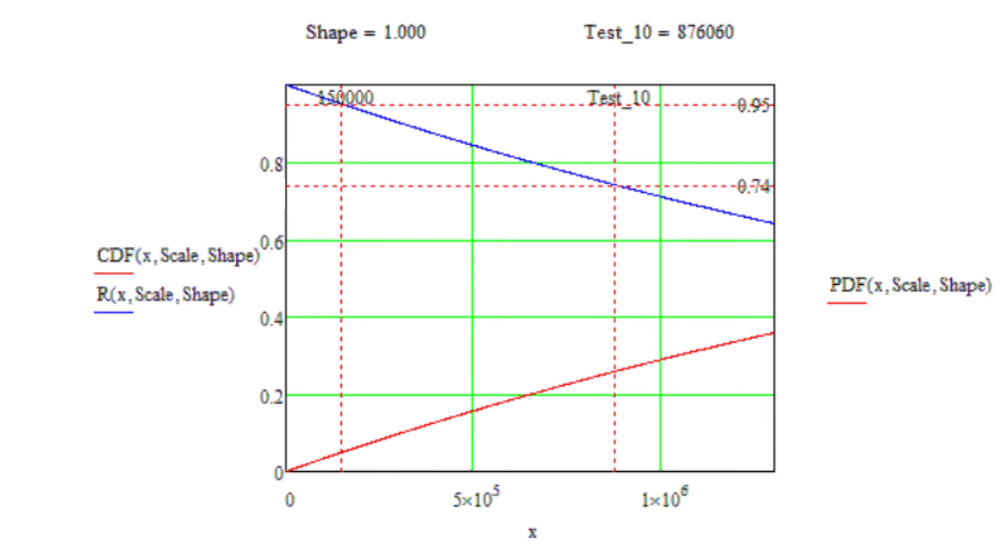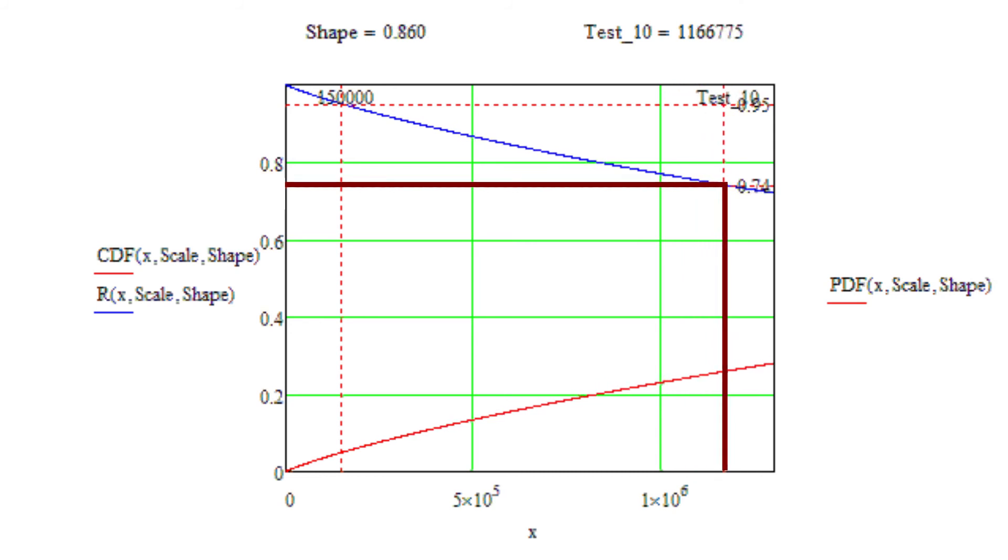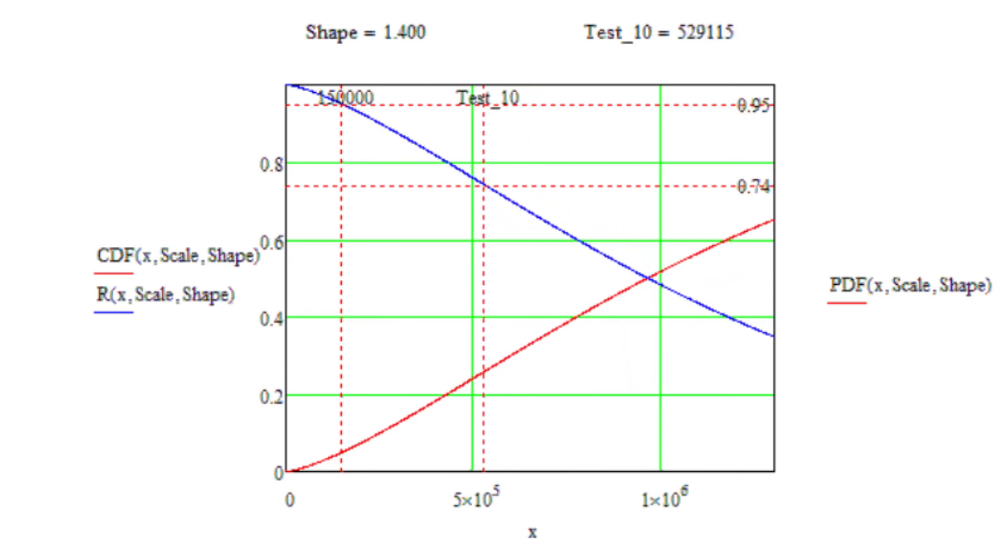If we start with the constant failure rate, the testing time would be almost 900,000 km for each of the 10 parts, and would increase with the decreasing Weibull shape. If we increase the Weibull shape to the estimated 1.4, the testing time is approximately 530,000 km, which is the answer we are looking for. If we had additional technical knowledge that would justify a more compact time span of failures, we could be able to further increase the Weibull shape and lower the testing time even more.